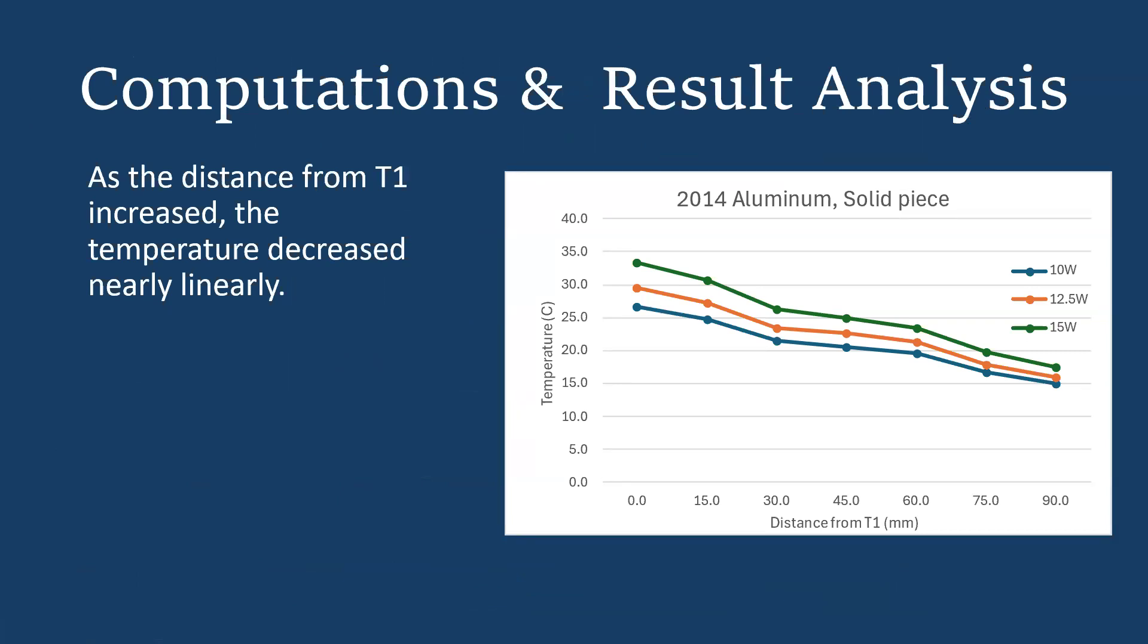This shows the solid piece of aluminum results, where as the distance from T1 increases, the temperature decreases, and this is about a linear relationship for the solid piece of aluminum.